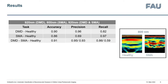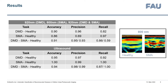During evaluation, 920 nm was the best photoacoustic image type for classification of DMD and healthy in the three-class case. 800 nm was the best wavelength for classification of SMA and healthy. Ultrasound showed slightly better accuracies for each task.